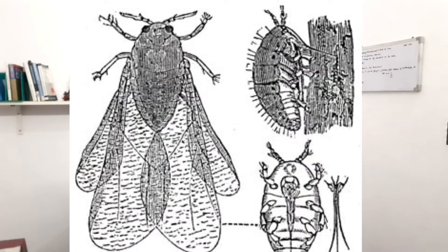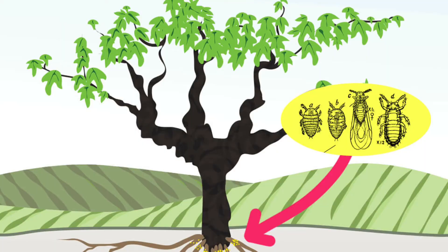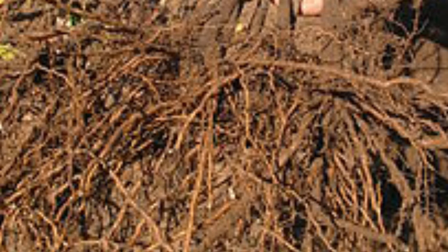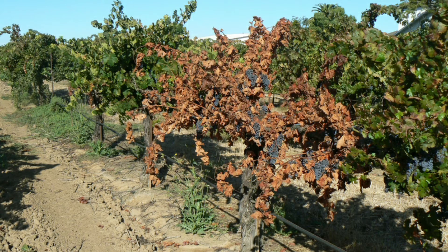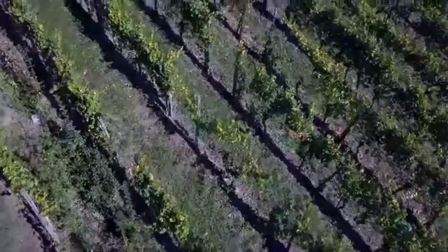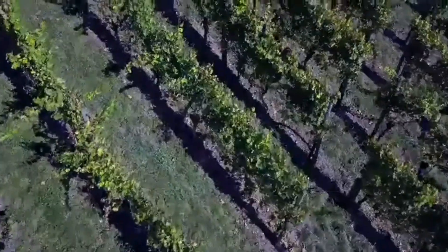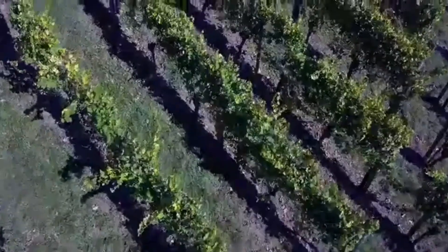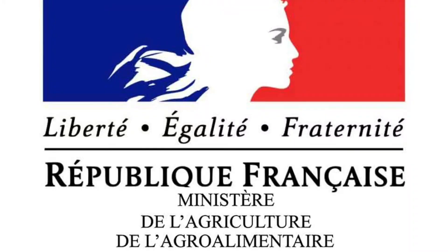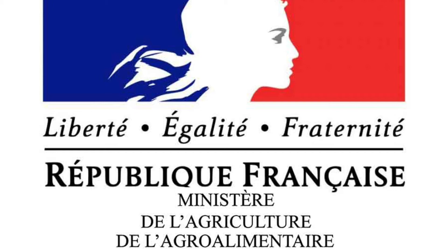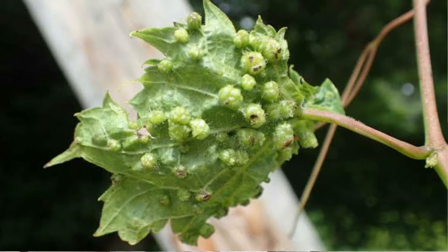Number five is Phylloxera, Dactylosphaera vitifoliae. It is caused by a microscopic sap-sucking insect that feeds on and eats the roots of the grapevine, damaging the roots so that the entire plant dies. In 1860, this disease destroyed much of the European vineyards, with very few vineyards uninfected. It had come from the US and was so devastating that the Minister of Agriculture and Commerce in France announced a reward of 20,000 francs — equal to 1 million dollars today — to anyone who could find a cure.